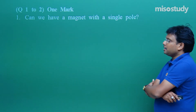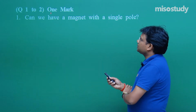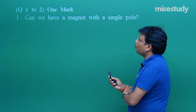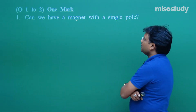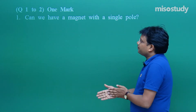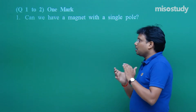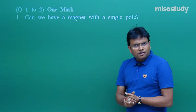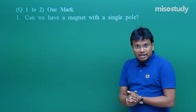Here is question number 1, and questions number 1 and 2 are both for one mark. The question is: can we have a magnet with a single pole? Or in other words, is it possible that magnetic monopoles exist?